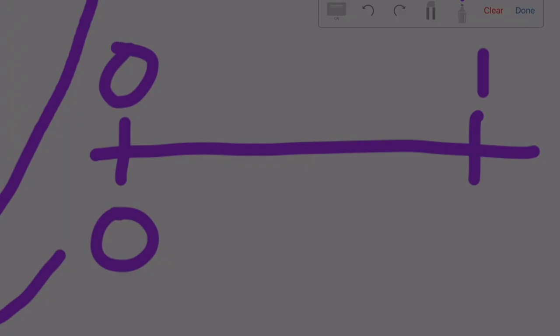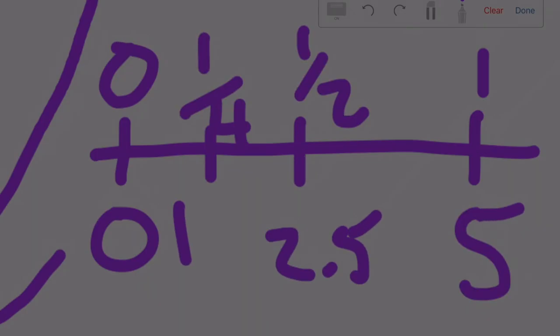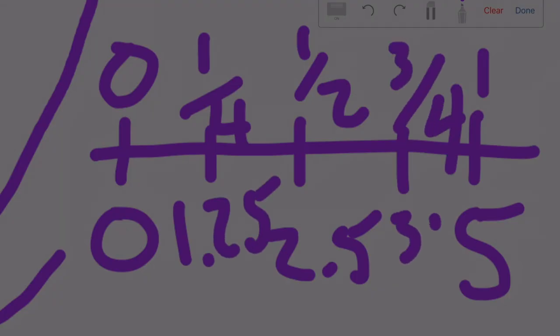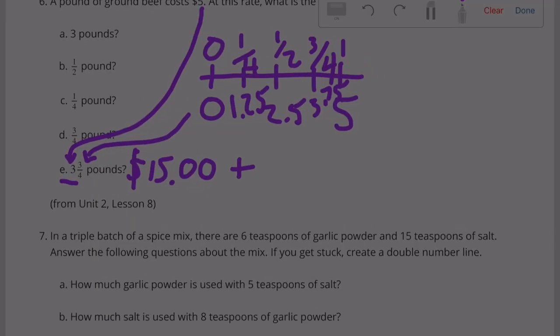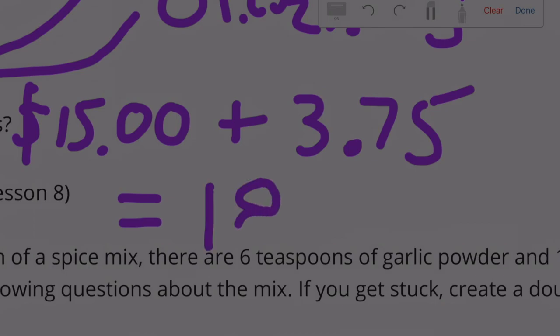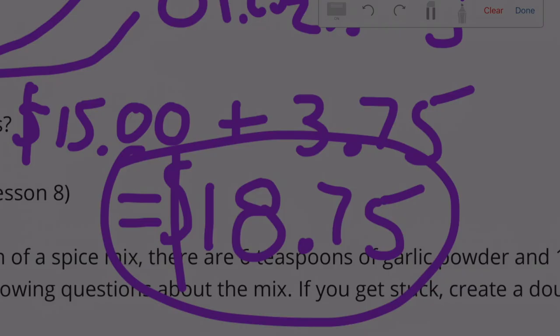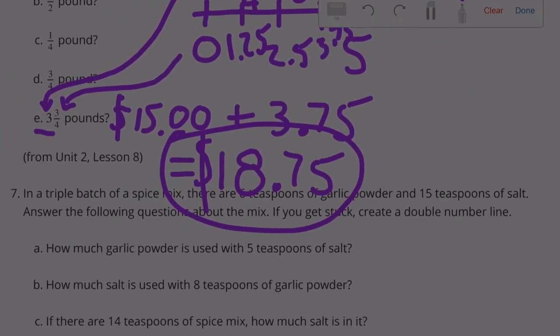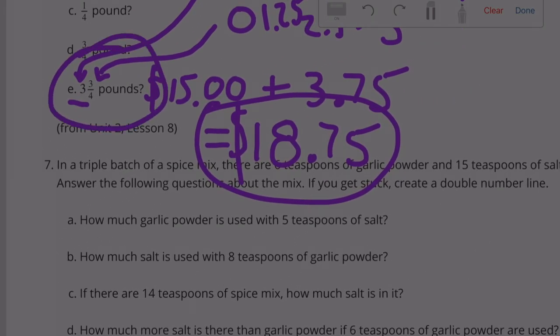So the price for 3/4 of a pound. 0, 1, $5. A half is $2.50. A fourth is $1.25. So 3/4 is $3.75. $15 plus $3.75 equals $18.75 a pound. $18.75 for 3 and 3/4 pounds.